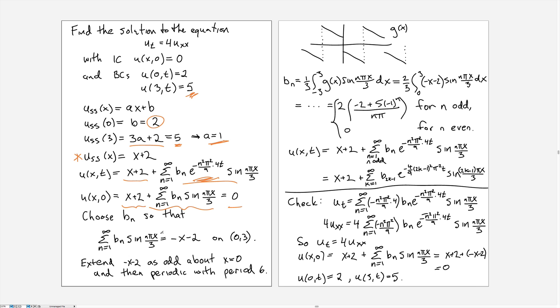Well, if we swing the x + 2 over to the other side, then we see that we want to have this sum of sines equal to -x - 2 on (0,3). Okay, so as we have before, we extend -x - 2, which is negative the steady state, as odd about x = 0 and then periodic with period 6 everywhere else.